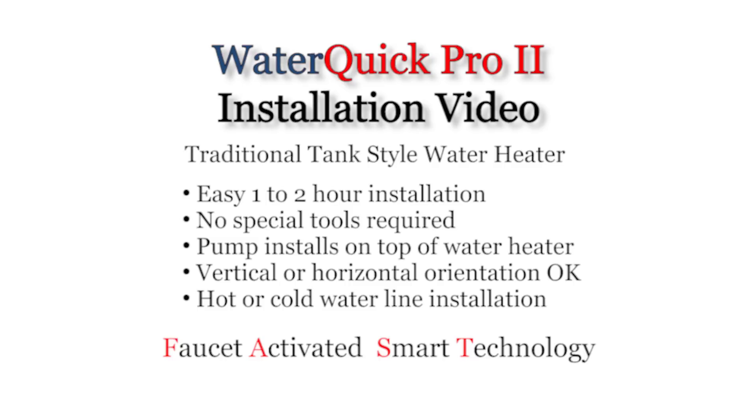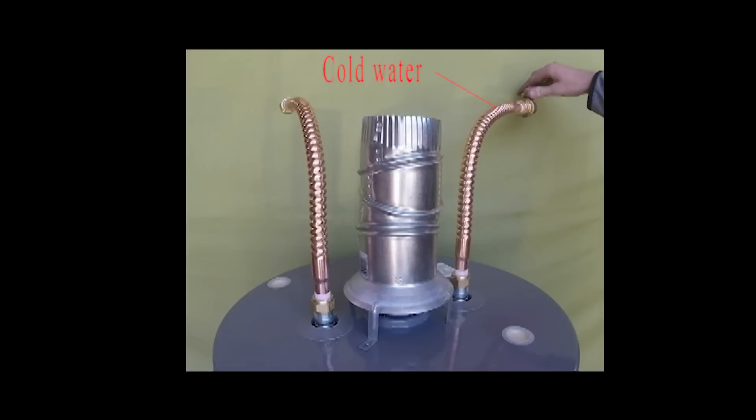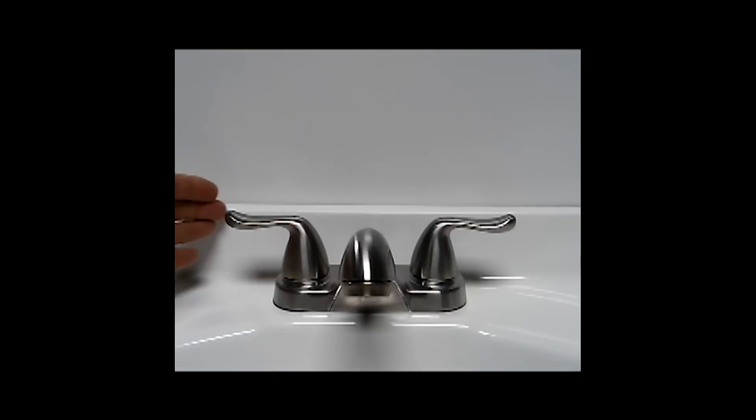The next step is to drain the water from the hot water line. Turn off the cold water supply to the water heater and then turn on any hot water faucet in the house and let the water run until it stops. Leave the faucet on throughout the installation.